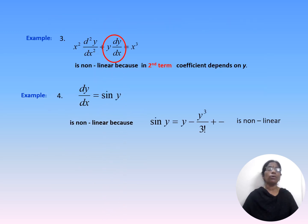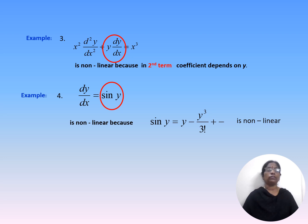Consider the equation x²·d²y/dx² + y·dy/dx = x³, which is nonlinear because in the second term the dependent variable y and its derivative dy/dx are multiplied together. Also, dy/dx = sin(y) is a nonlinear differential equation because the right-hand side function sin(y) is a nonlinear function.